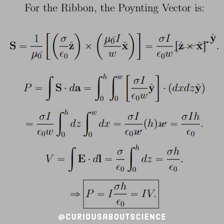And then for the ribbon, the Poynting vector is — plug in the E and B fields again. Z cross X, a little bit backwards, but this gives us Y-hat. Remember how the order affects the direction, so be careful of that. Then find the surface integral, running from 0 to H and 0 to W inside, in the Y-hat direction. Run it through, split the integrals: we get an H and a W. The W's cancel, so we're left with sigma I H over epsilon. Recall that the potential for this situation is E·dl running from 0 to H dz, which gives us sigma H over epsilon. Same thing here — we get P equal to IV. So that is wonderful to see.